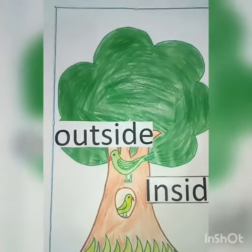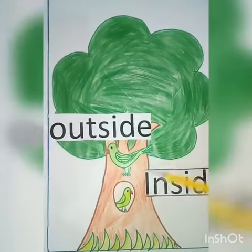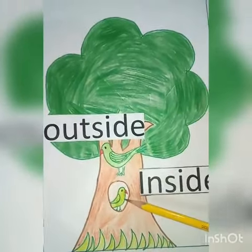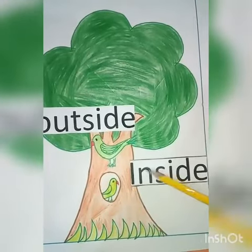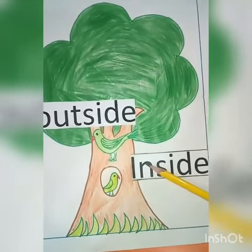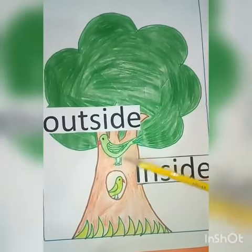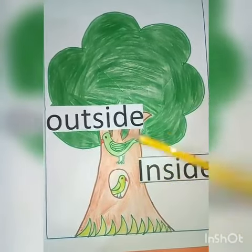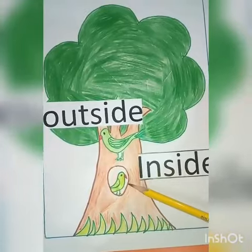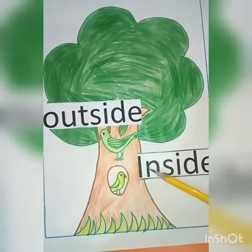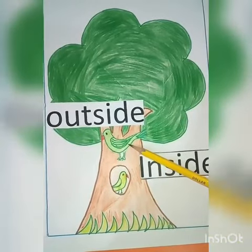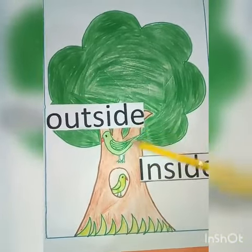Next concept is inside and outside. This is a picture of a tree. A parrot is sitting inside the hole. And another parrot is sitting outside the hole. This parrot is sitting inside the hole and this parrot is sitting outside the hole.